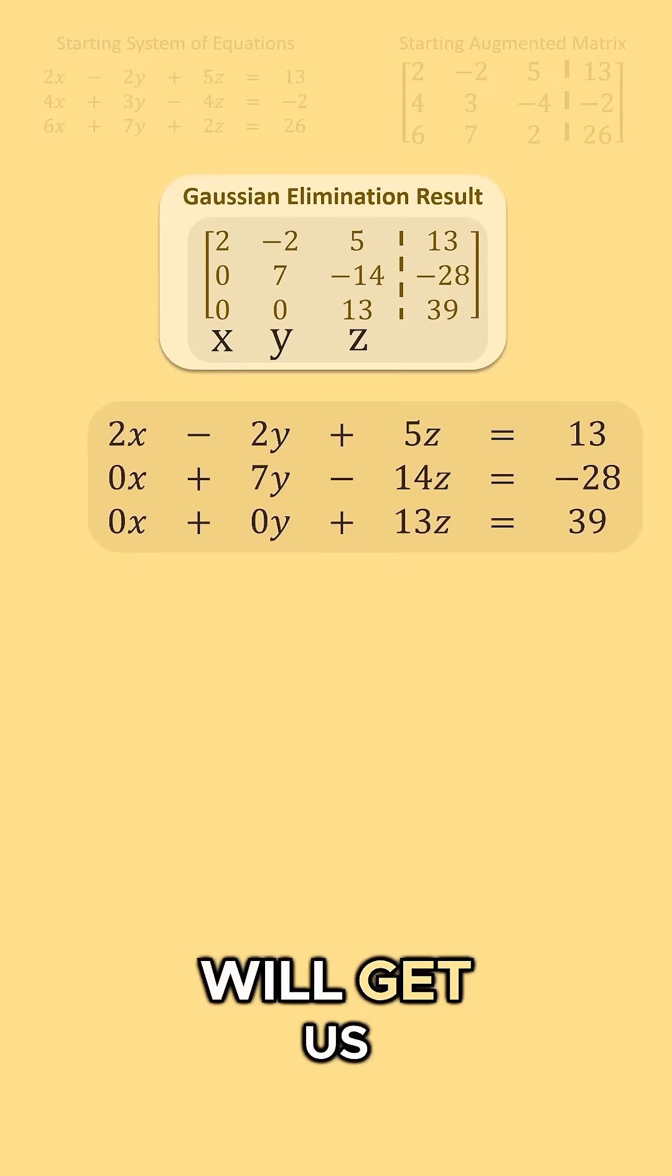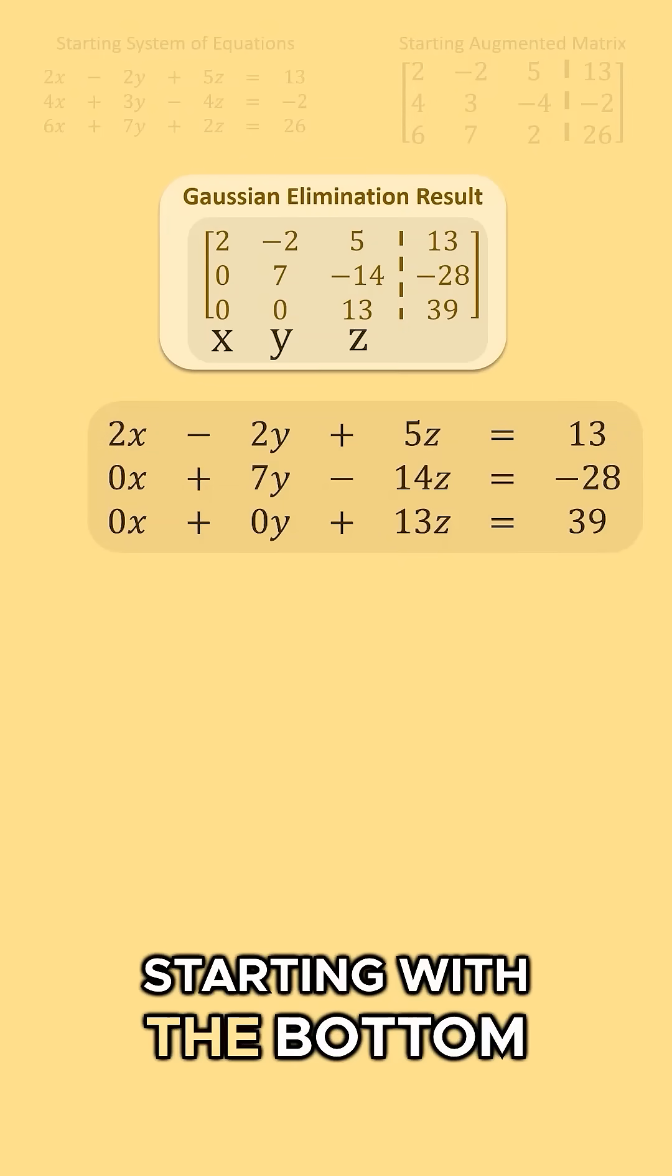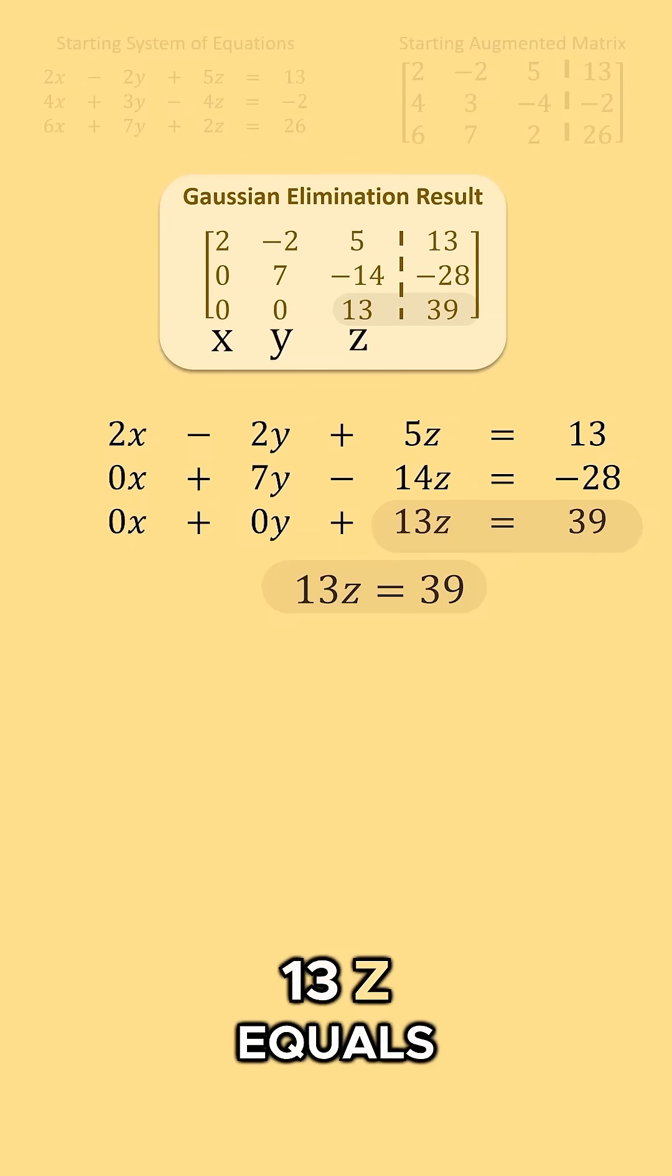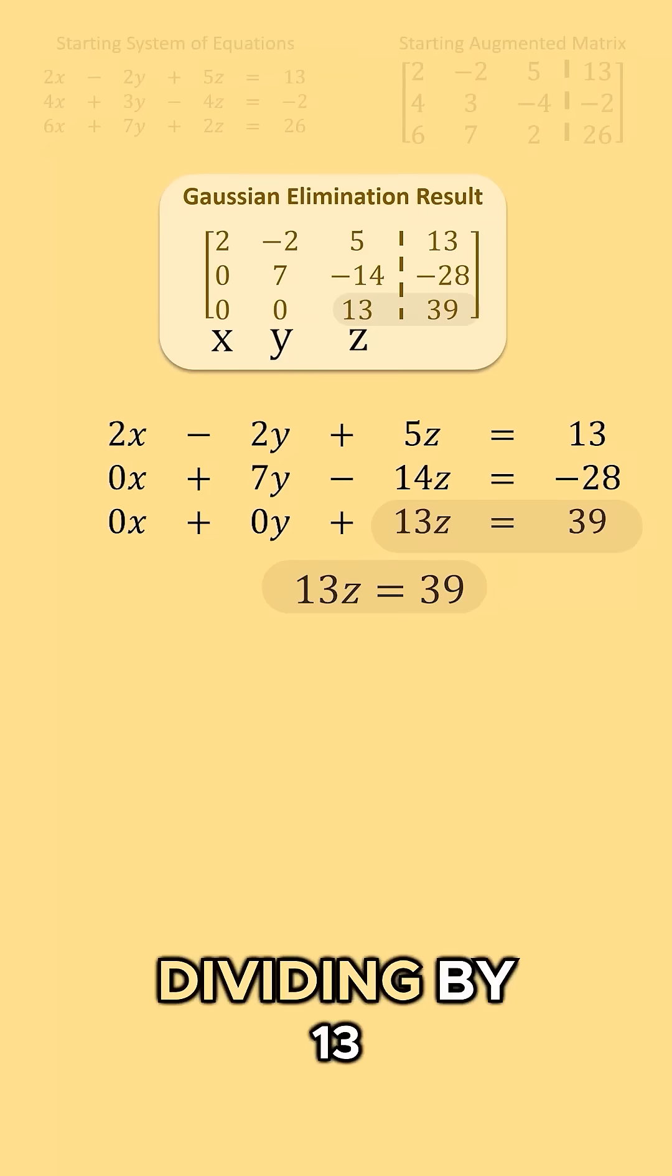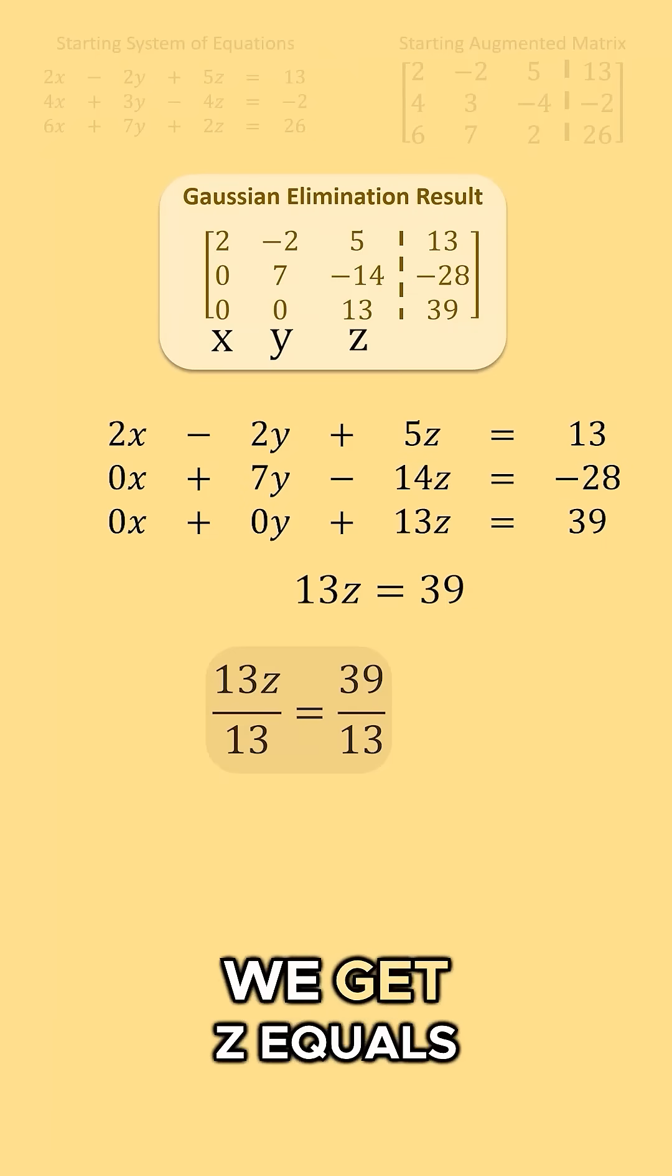Similarly, this top system will get us the same result. Starting with the bottom row, we see that 13z equals 39. Dividing by 13 on both sides, we get z equals 3.